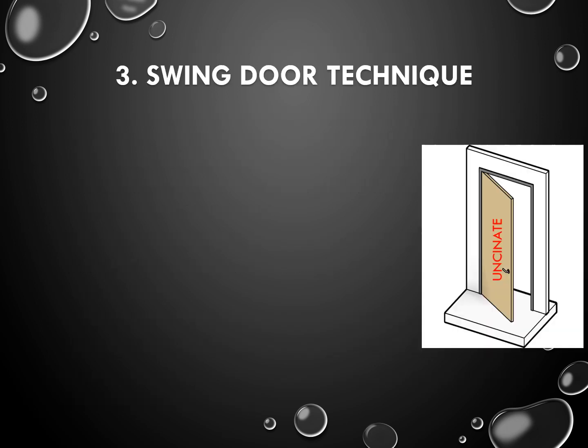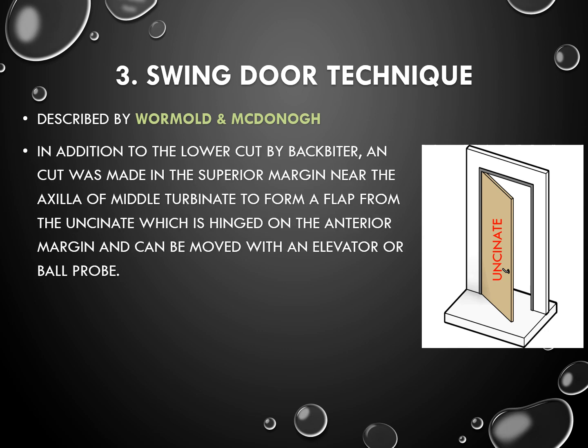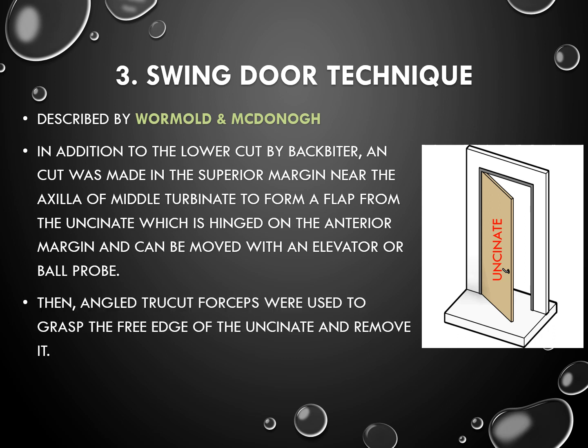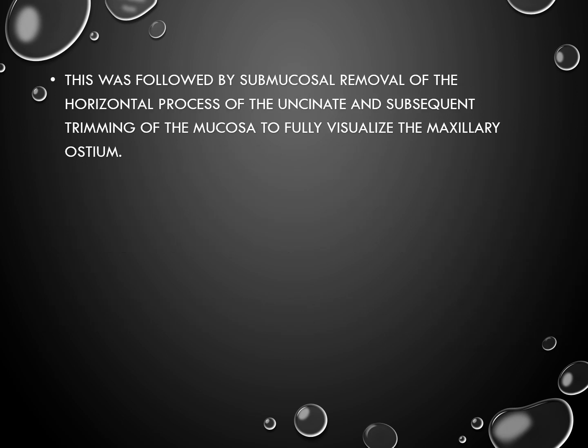The third technique is the swing door technique, described by Vermaul and Mcgenau. In addition to the lower cut by a back-biter as described in the previous procedure, a cut was made in the superior margin near the axilla of the middle turbinate to form a flap from the uncinate process, which is hinged on the anterior margin and can be moved with an elevator or ball probe. Angled throughput forceps are used to grasp the free edge of the uncinate and remove it, followed by submucosal removal of the horizontal process and trimming of the mucosa to fully visualize the maxillary ostium.